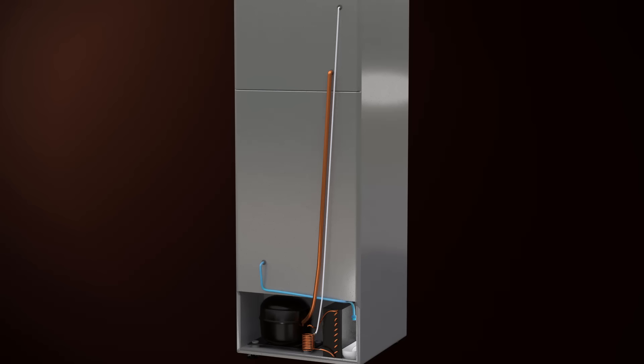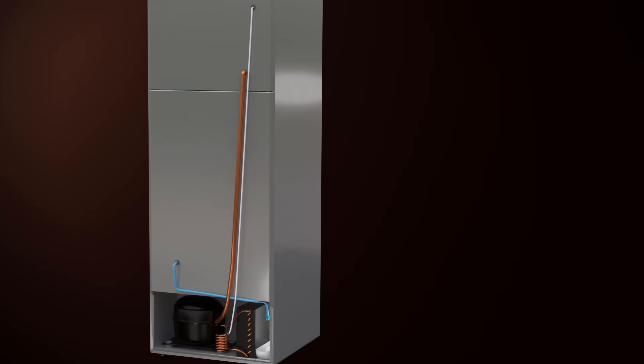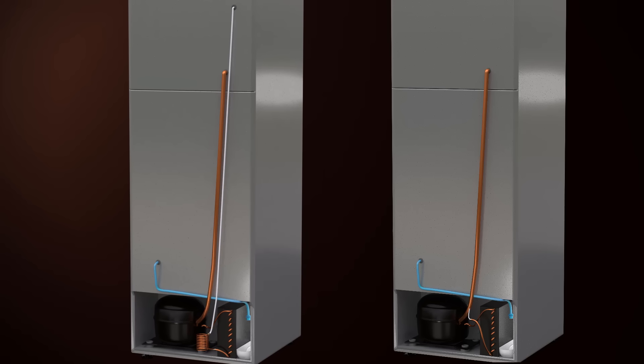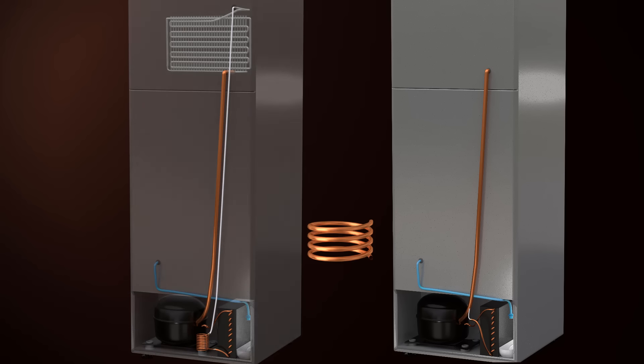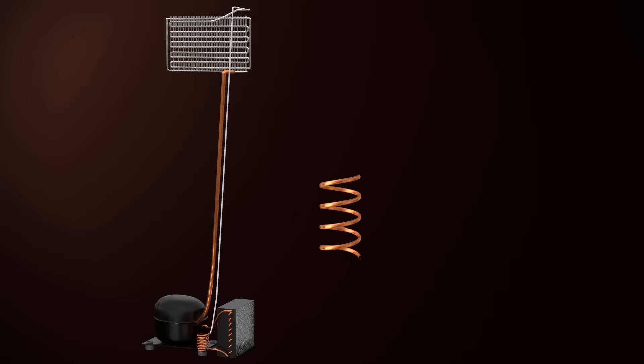However, if you check your home refrigerator, you can see only one line on the outside. Why is this the case? The most crucial part of the refrigerator is the capillary tube, which need not be a spring-like device. It can be a long, straight tube as shown.